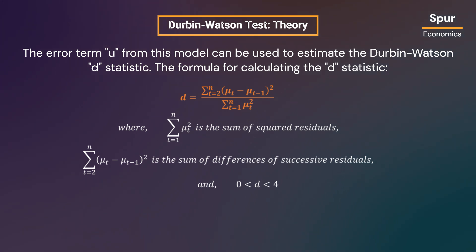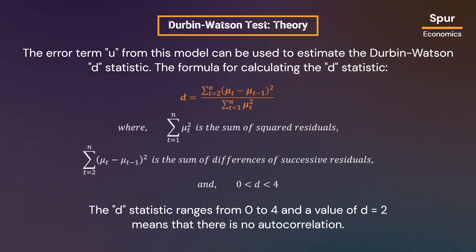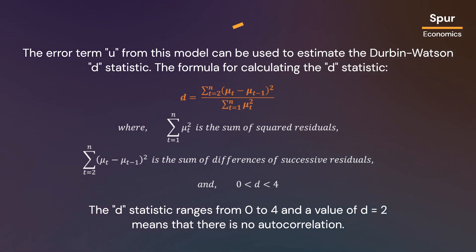The error term mu from this model can be used to estimate the Durbin-Watson d statistic. The formula for calculating the d statistic is shown here. In this formula, the denominator is the sum of squared residuals mu, and the numerator is the sum of differences of successive residuals mu t and mu t minus 1. The d statistic ranges from 0 to 4, and a value of d equals 2 means that there is no autocorrelation.